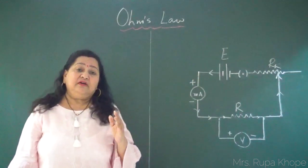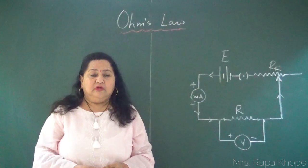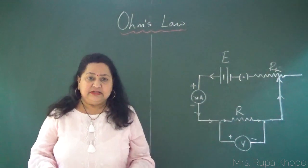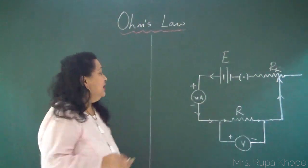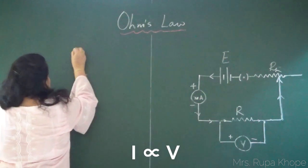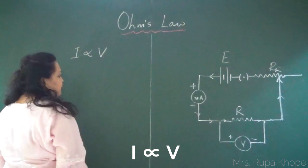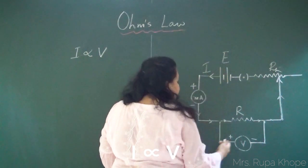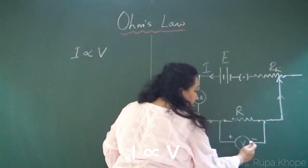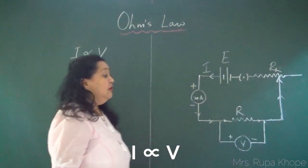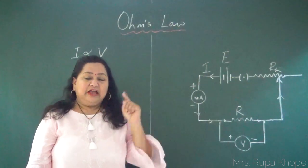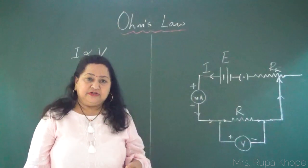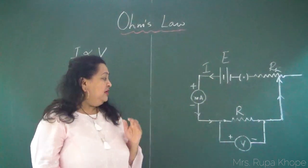First, let's know the statement of Ohm's law: when a current is flowing through a wire, the current flowing through it is directly proportional to its potential difference, provided the external conditions — temperature, pressure, and dimensions — remain constant.